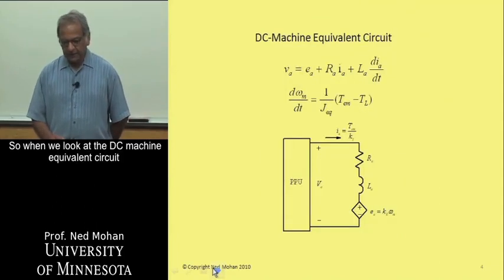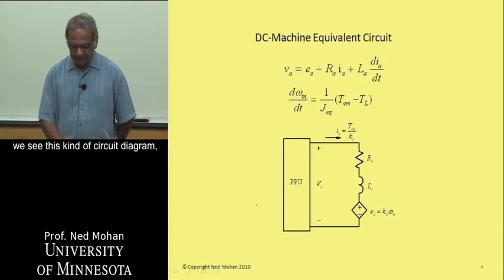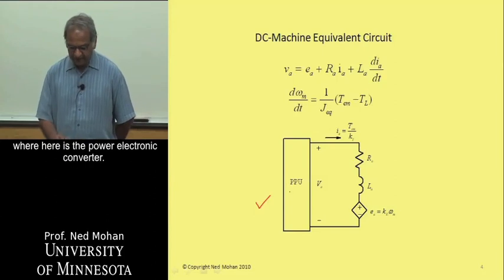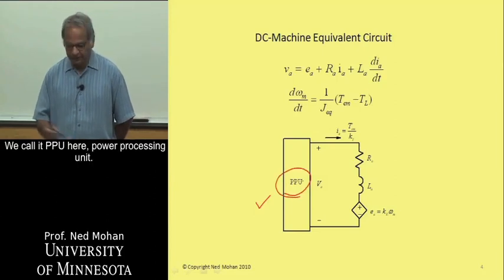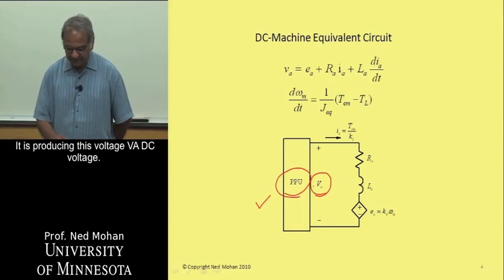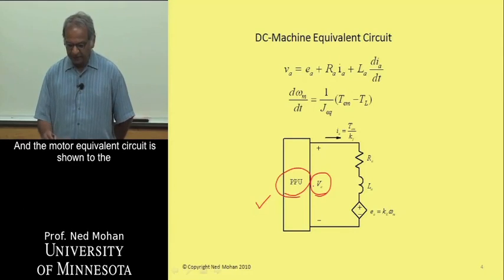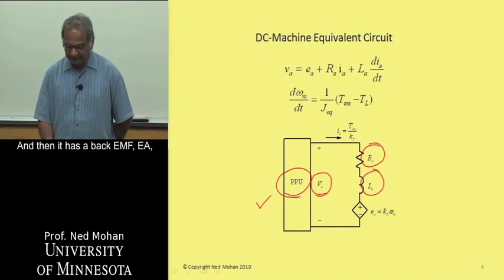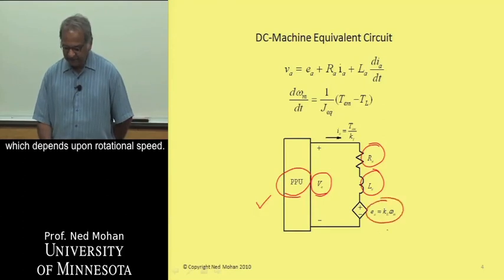So when we look at the DC machine equivalent circuit, we see this kind of circuit diagram, where here is the power electronic converter. We call it PPU here, power processing unit. It is producing this voltage VA, DC voltage, and the motor equivalent circuit is shown to the right here in terms of the armature resistance, armature inductance, and then it has a back EMF EA, which depends upon the rotational speed.